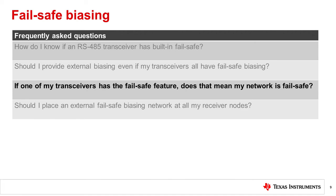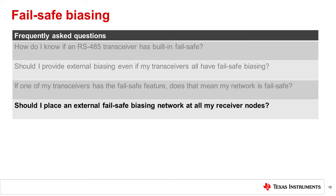There are some exceptions in a few older transceivers. External fail-safe biasing is ideally placed at only one node. If it is placed at each node, the pull-up and pull-down resistances need to be much higher. The drawback to this is that the pull-up and pull-down strength becomes a function of the number of nodes installed.